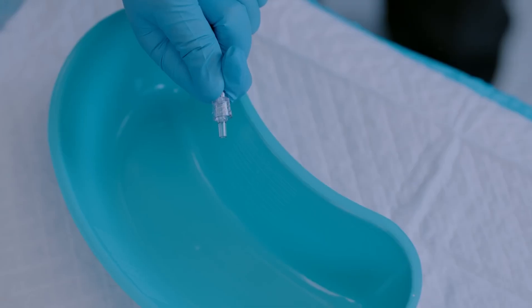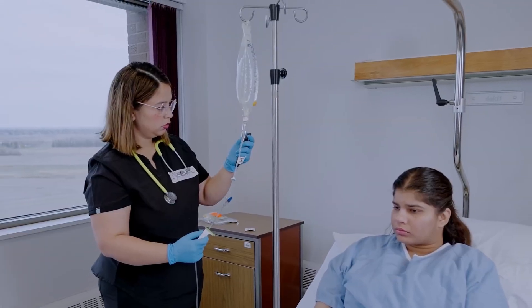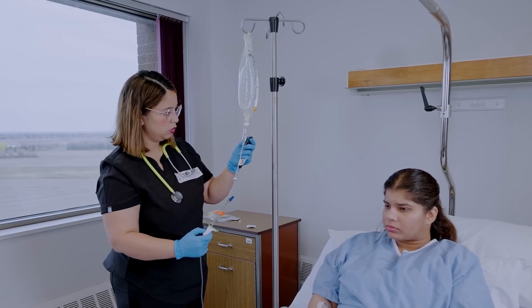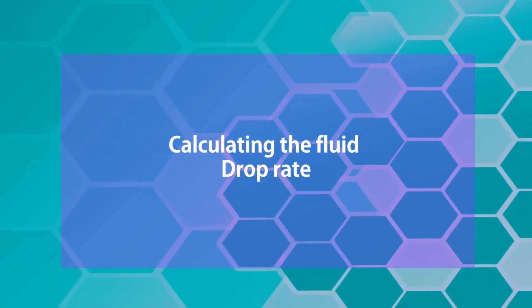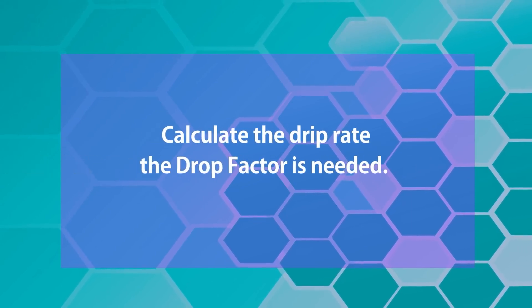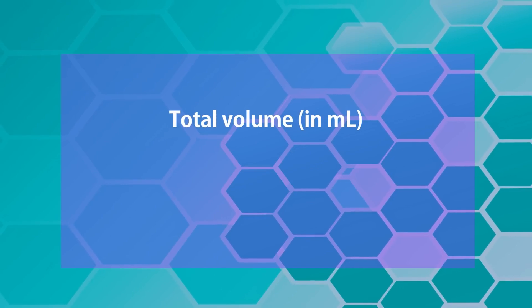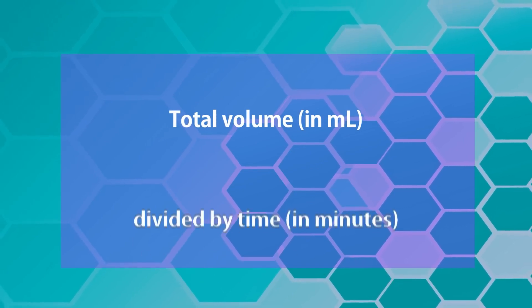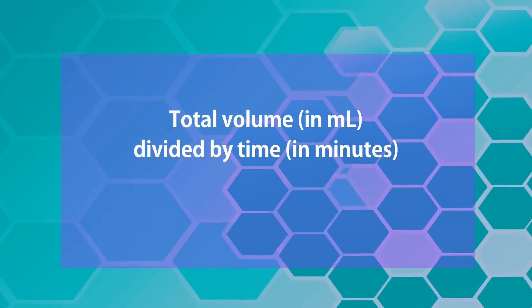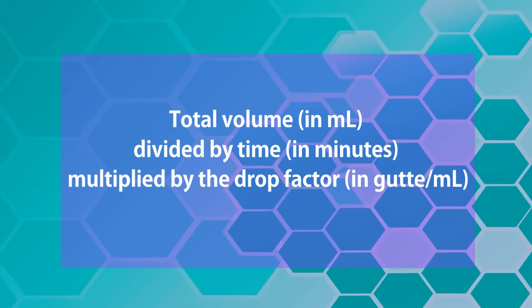Now you guys have already learned how to spike the bag and prime the tubing. Now it's time to learn how to give IV fluid via gravity method. In order to do that, we need to learn calculating the fluid drop rate. The formula for calculating the IV drip rate is total volume in milliliters divided by time in minutes, multiplied by the drop factor, which is in guttae per mL.